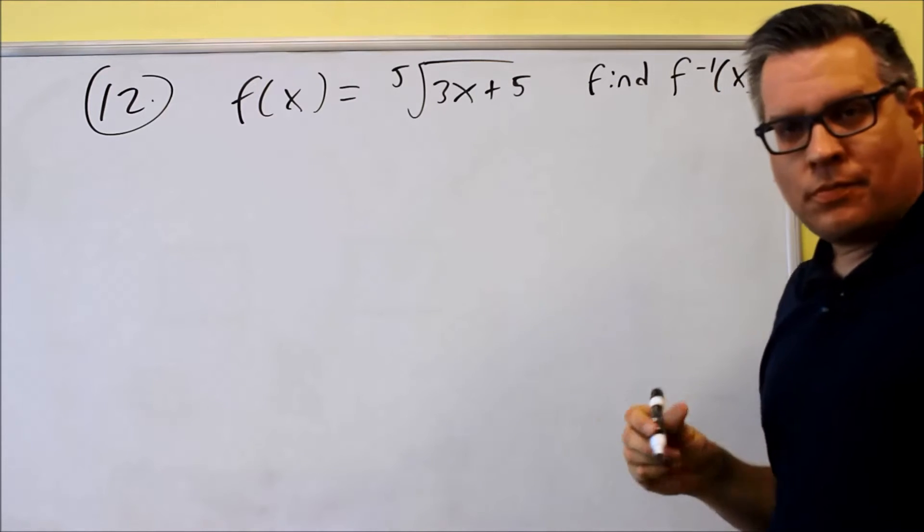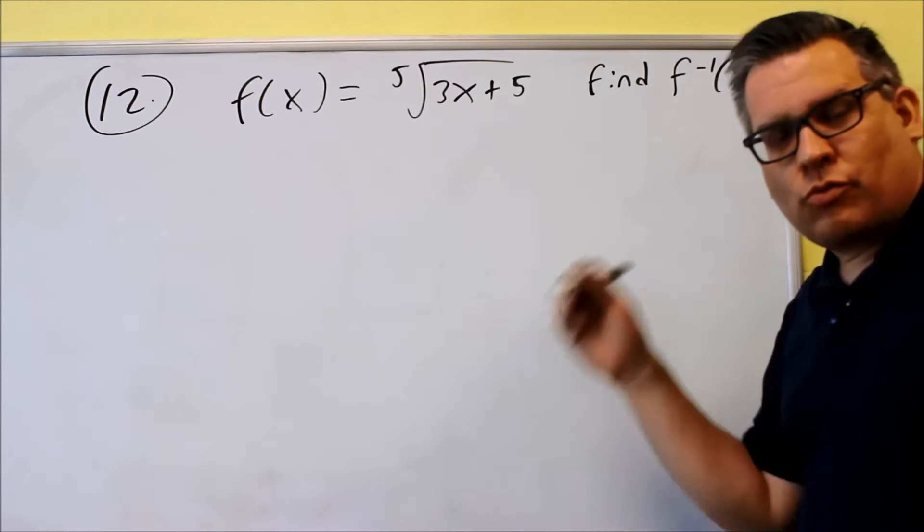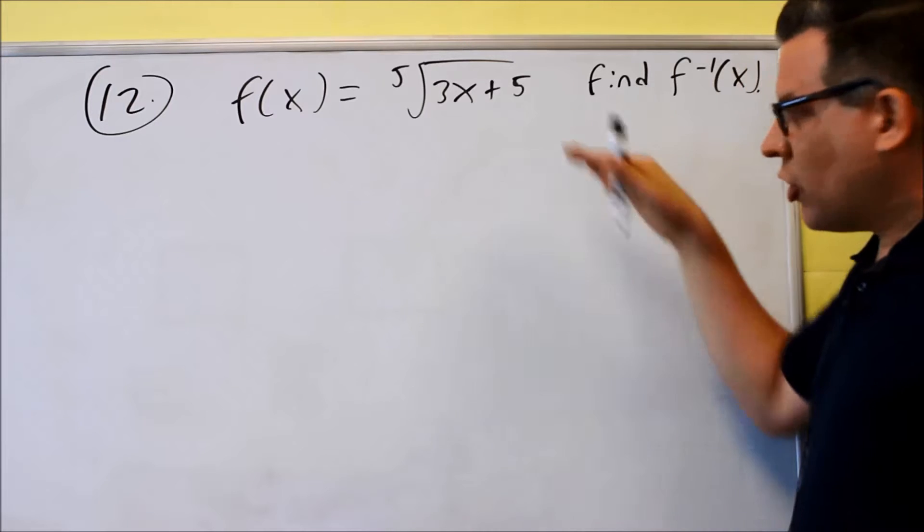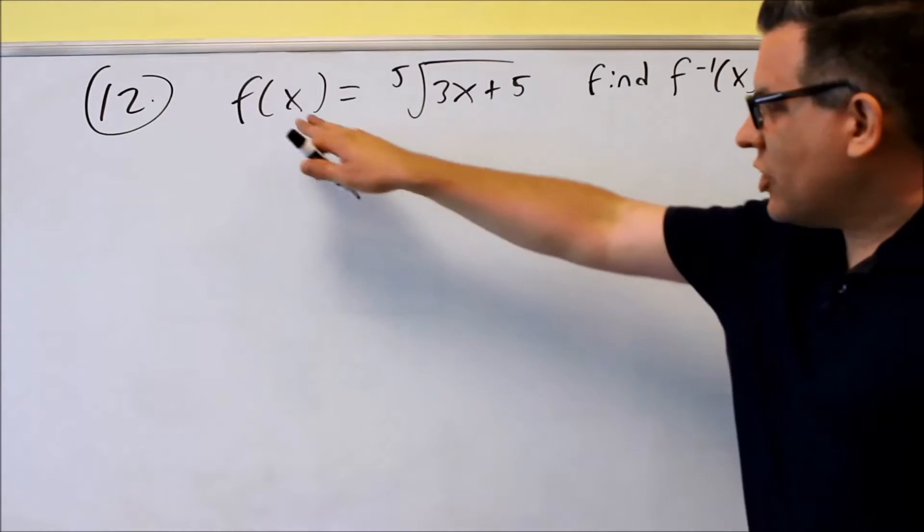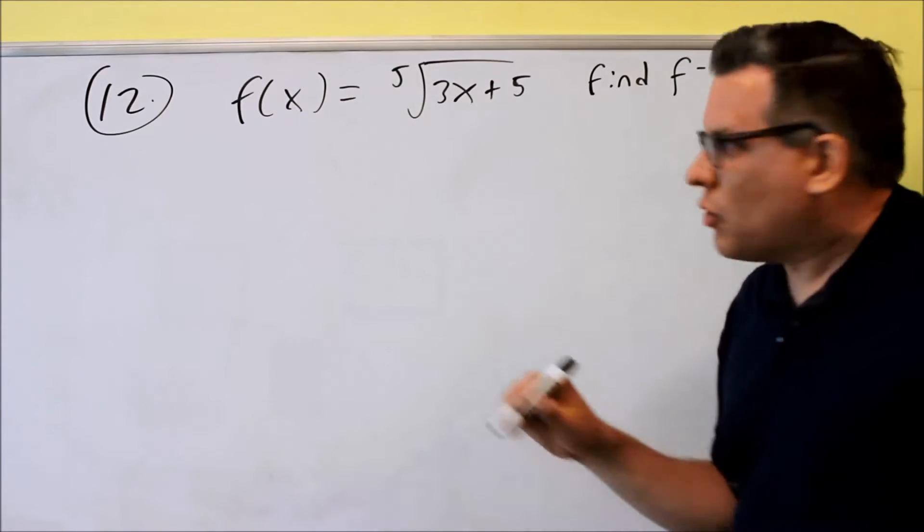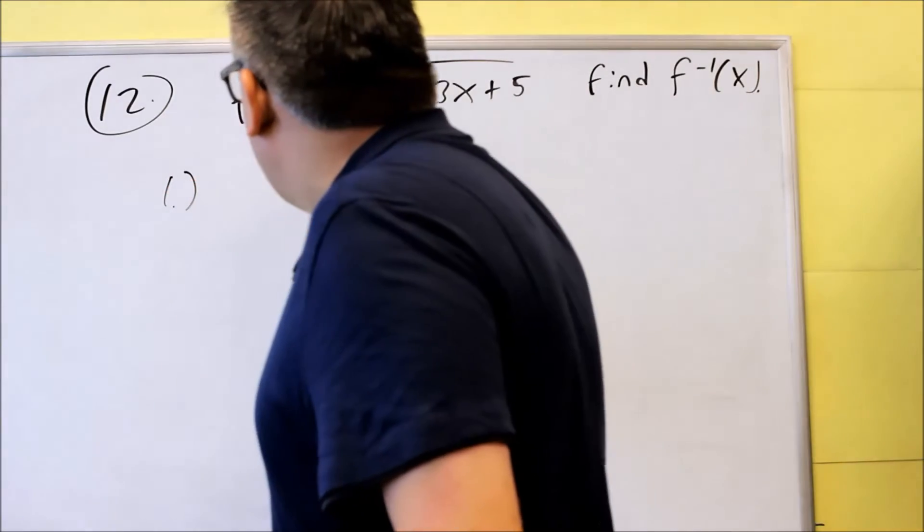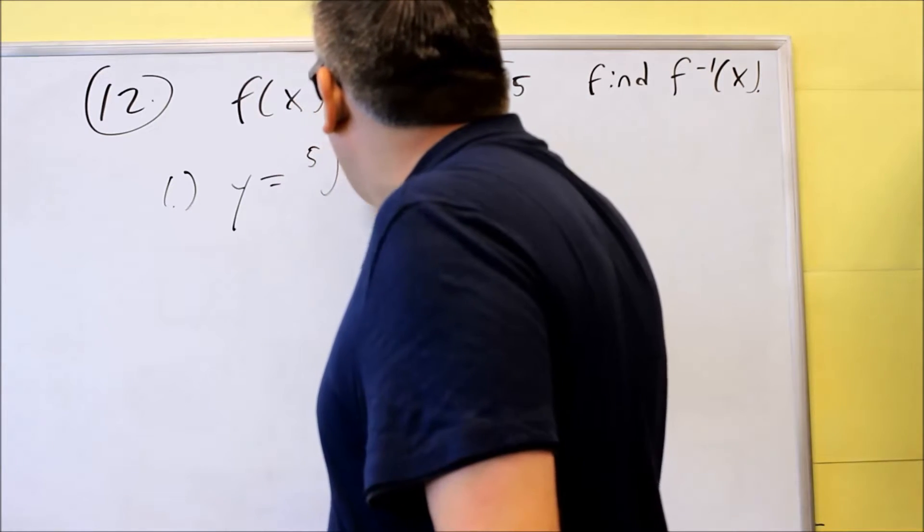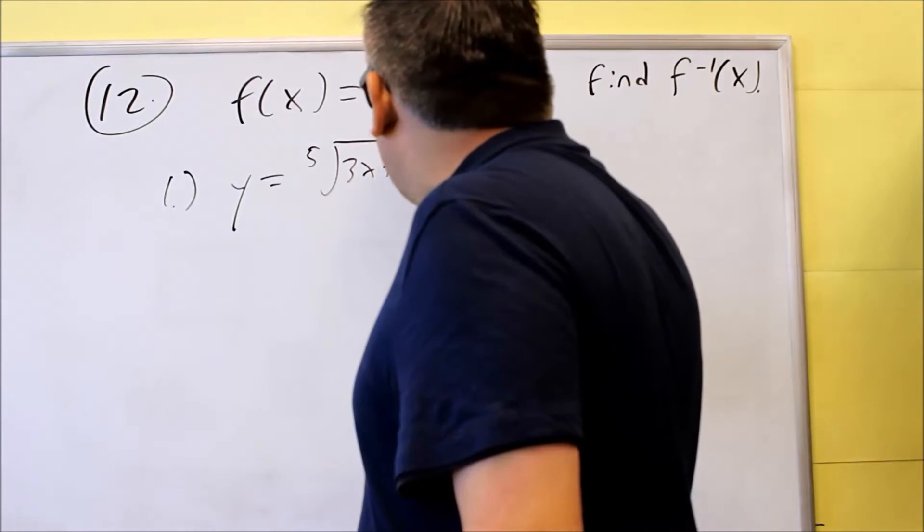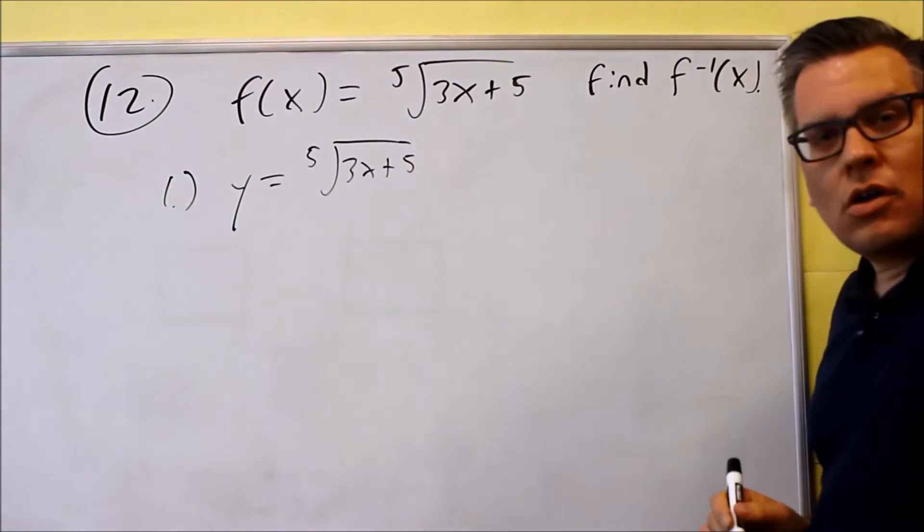We want to follow the four-step process that was talked about in lecture. I'm going to go ahead and run through each of those. The first step is take the original one, replace the f(x) with a y. So here's my first step: y equals fifth root of 3x plus 5. That's the first step.